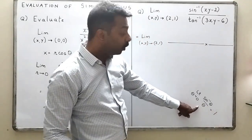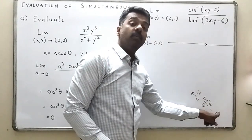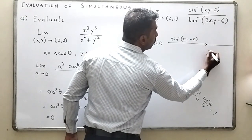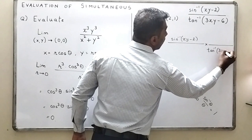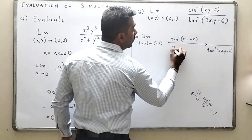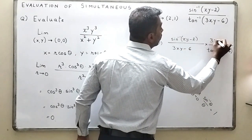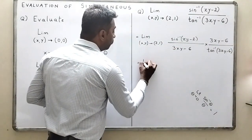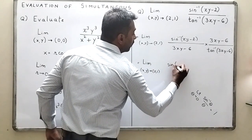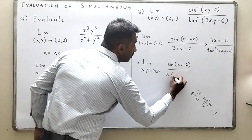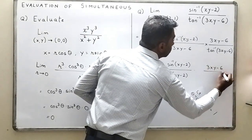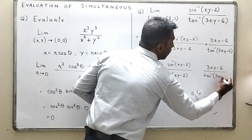We multiply and divide smartly. We write sin⁻¹(xy − 2) over tan⁻¹(3xy − 6), then multiply and divide by (3xy − 6). This gives sin⁻¹(xy − 2) / [3(xy − 2)] multiplied by (3xy − 6) / tan⁻¹(3xy − 6). Since x → 2 and y → 1, we have xy − 2 → 0 and 3xy − 6 → 0.